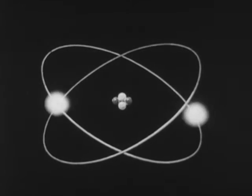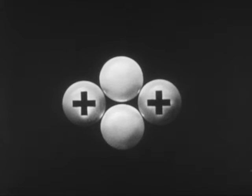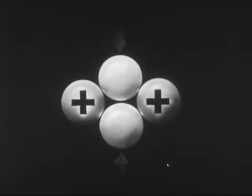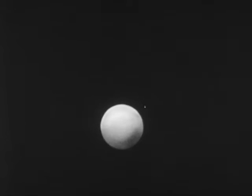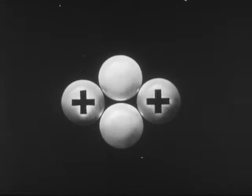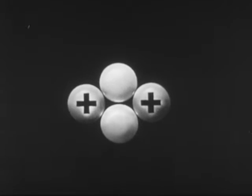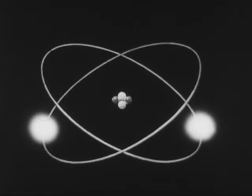Slightly more complex is the helium atom. This atom has two electrons and a nucleus containing two protons and two particles called neutrons. A neutron weighs about the same as a proton but has no electrical charge; it can be thought of as an electron and a proton combined. The helium atom has a nucleus of two protons and two neutrons, and two electrons in outer orbits.